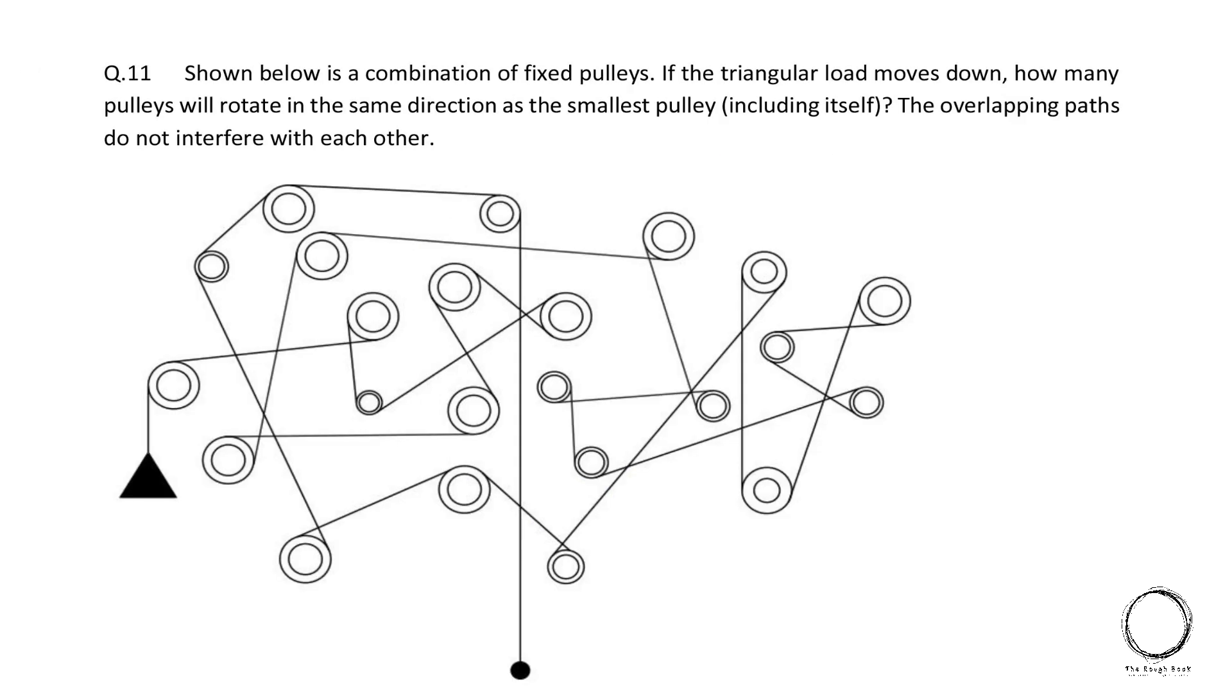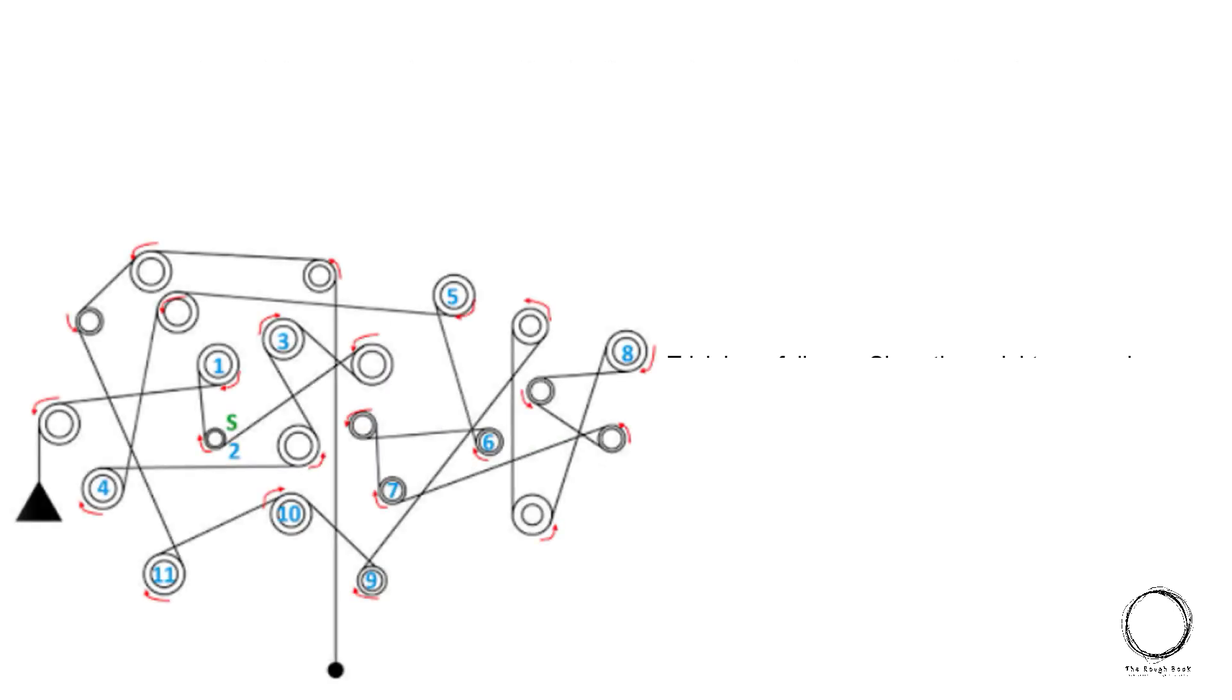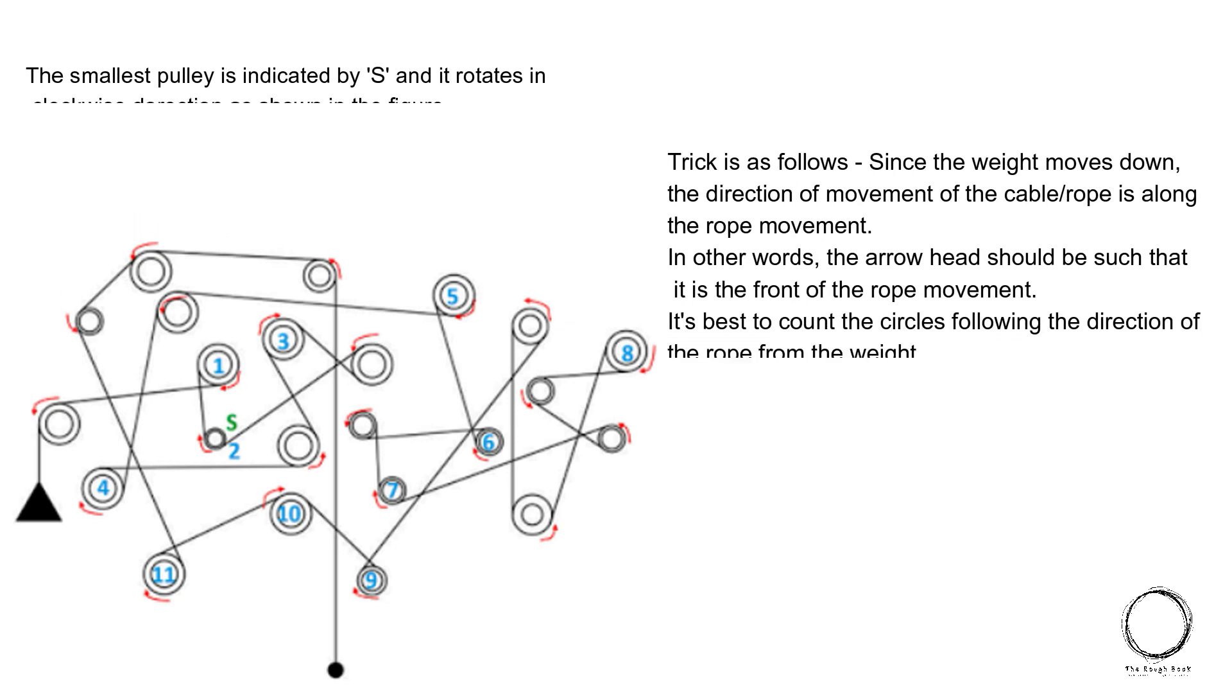Shown below is a combination of fixed pulley. If the triangular load moves down, how many pulleys will rotate in the same direction as the smallest pulley, including itself? The overlapping paths do not interfere with each other. So here's the solution. The smallest pulley is indicated by S and it rotates in clockwise direction as shown in the figure.